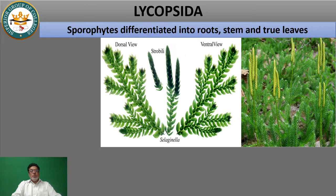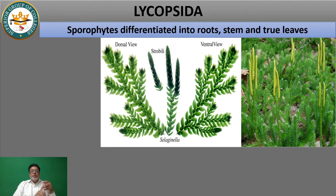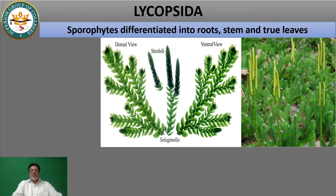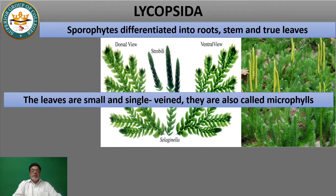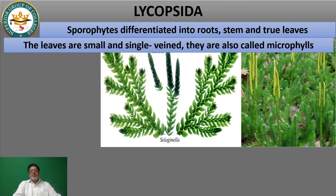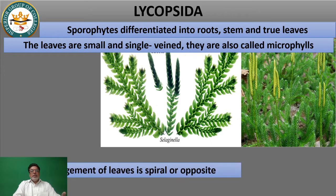Lycopsida is a sporophyte that can differentiate into true root, stem, or leaf. This is the first group, which has stem present, roots present, and leaves present. These leaves are called microphylls. We have discussed microphylls in the first lecture. Microphylls are so called because they have a single vein — each leaf has only one vein.